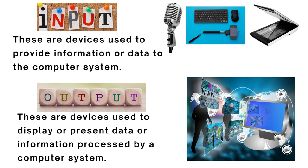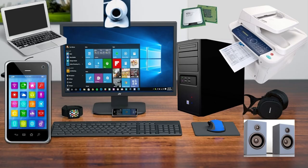The monitor displays images, text, and other visual information generated by a computer. The printer produces hard copies of text or images from a computer system. The projector displays images and videos on a large screen or wall for presentations or entertainment. Speakers produce sound output from a computer system.